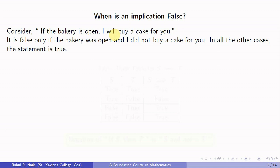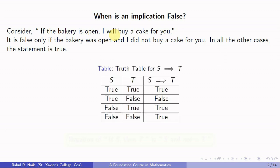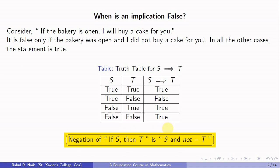To get a detailed picture, we have the truth table. When S is true and T is true, S implies T remains true. It is false only when S is true and T is false. If S is false, I am not bound to fulfil the promise, so whether T is true or false, the statement is true. In a nutshell, the negation of 'if S then T' is 'S and not T'. For example, the negation of 'if the bakery is open then I will buy a cake' is 'the bakery is open and I did not buy a cake'.